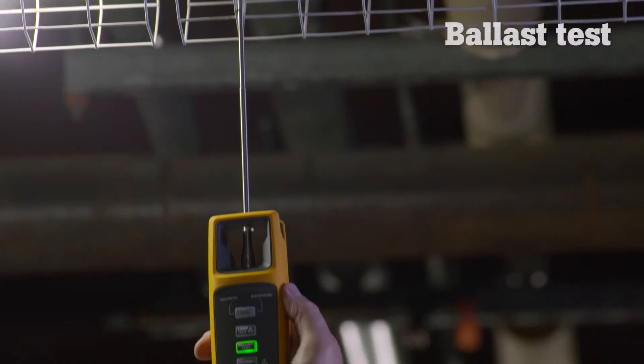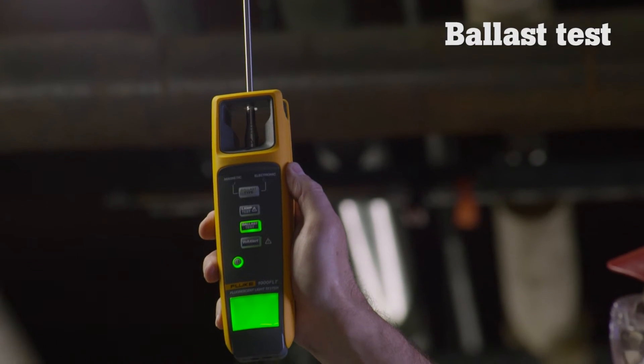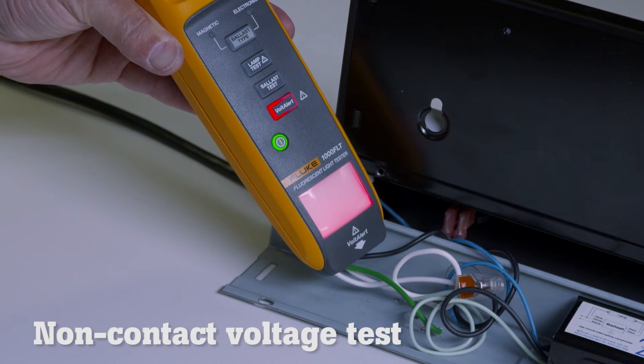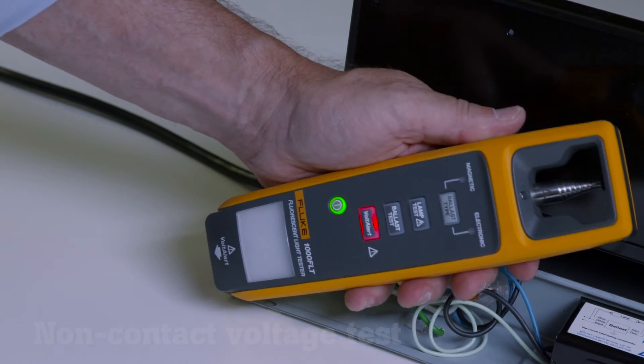The ballast test easily determines if the ballast is working. The non-contact voltage test quickly checks for incoming voltage.